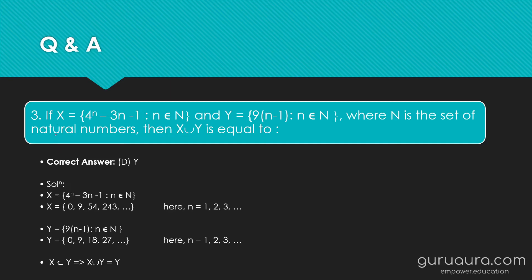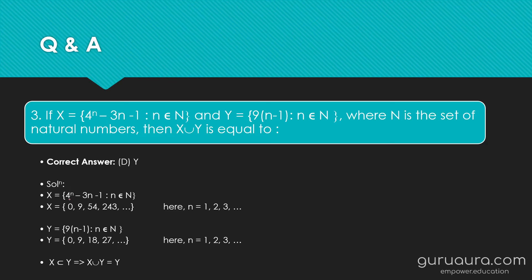Let's list the elements of the two given sets. For set X, N takes values 1, 2, 3, 4 and so on. For n=1: 4^1 − 3(1) − 1 = 4 − 4 = 0. For n=2: 4^2 − 3(2) − 1 = 16 − 7 = 9. For n=3 we get 54, and for n=4 we get 243, and so on.